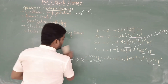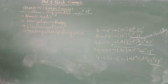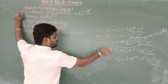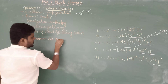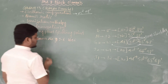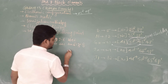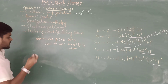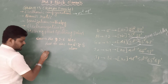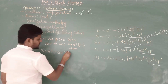Next is ionization enthalpy. Ionization enthalpy is the energy required to remove the outermost electron from an isolated gaseous atom. Down the group, ionization enthalpy decreases, due to the increasing size of the atom. So boron has higher ionization enthalpy than aluminium, aluminium has higher than gallium, and gallium has higher than indium.